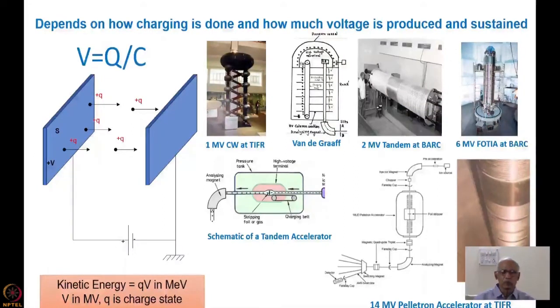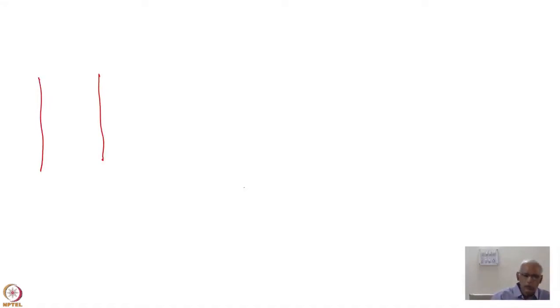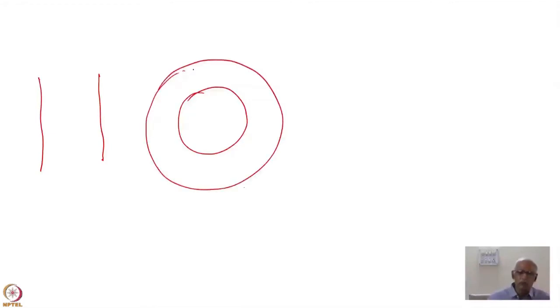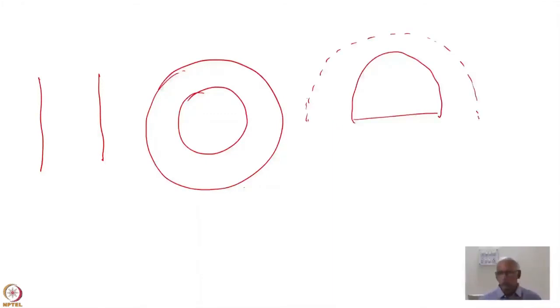You can see here various geometries used for the capacitors or the condensers. The first one is parallel plates. Different geometries — for example, you can have two plates, which will also form a capacitor with a certain value of capacitance. Or it could be spherical — a sphere, a concentric sphere, surrounded by another sphere — which will also form a capacitor. The third geometry is hemispheres — not a full sphere, but hemispheres surrounded by another hemisphere.